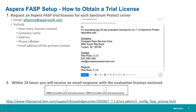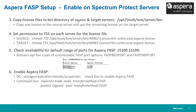To give Aspera FASP a try, first obtain a trial license by emailing alliances@asperasoft.com, including how many licenses you need, your company name, address, phone number, and the email address of the primary contact. Within 24 hours you'll receive a response containing two evaluation licenses. Copy one license to the Optivoli TSM server bin on your source server and the other to your target server.